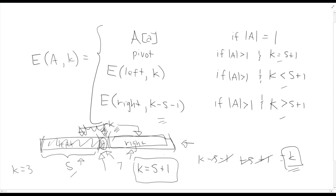The quick select algorithm operates by performing the pivot operation, then recognizing the element we're looking for will only be in one subproblem. This gives it a binary search-like feel — we only do one recursive call instead of both. In quick sort we recurse on both sides, but in quick select these are two distinct cases and we only do one of them. Because of this, we may get a different runtime from quick select than from quick sort.